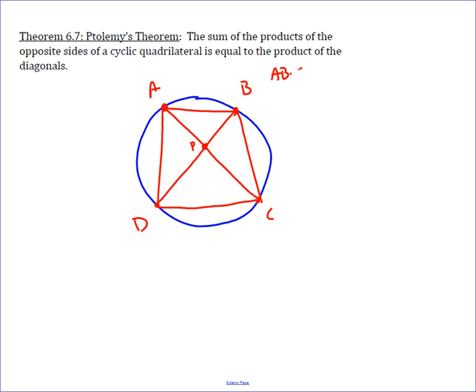AB times CD plus BC times AD is equal to the product of the diagonals, so AC times BD.